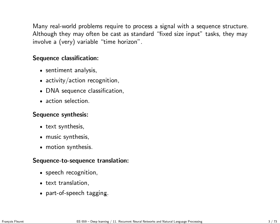Sequences can be used for classification. Typically sentiment analysis, where the input sequence is a snippet of text and you have to predict if it's positive or negative — a complicated task because of many subtleties in language. It can be activity or action recognition where the input sequence is a video and you predict if it's an attack or defense action. It can be DNA sequence classification, or action selection where the input is the sequence of what has been observed so far and you predict the optimal next action.